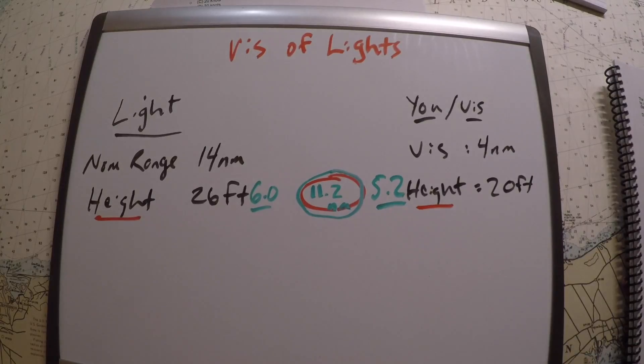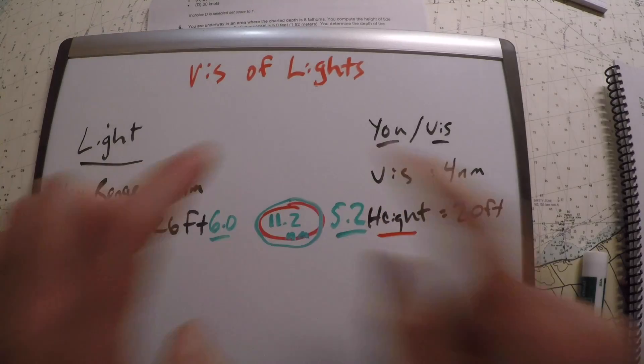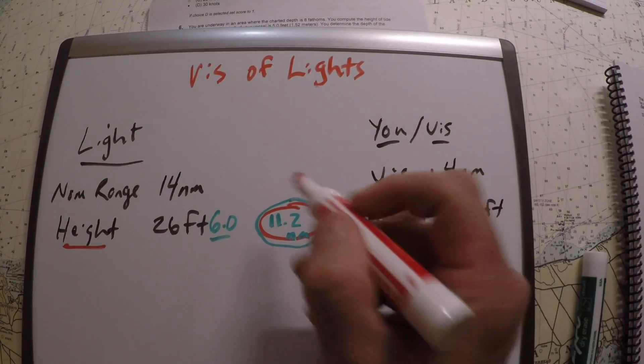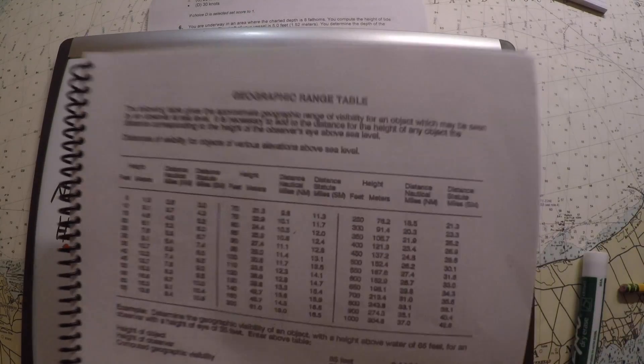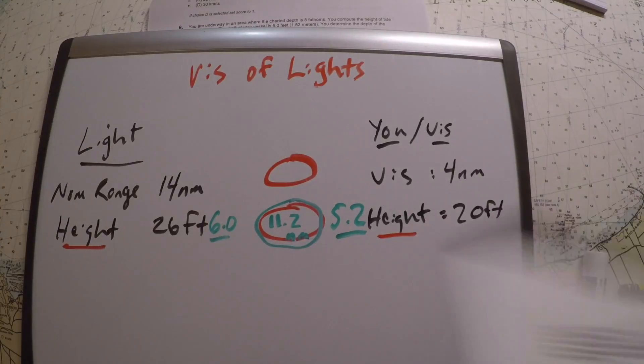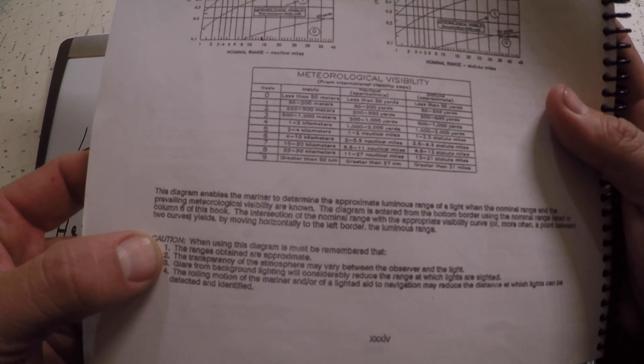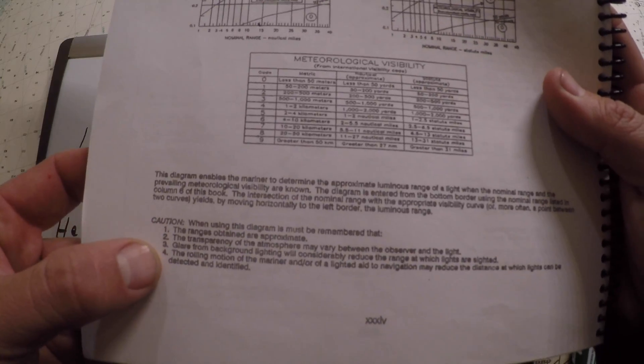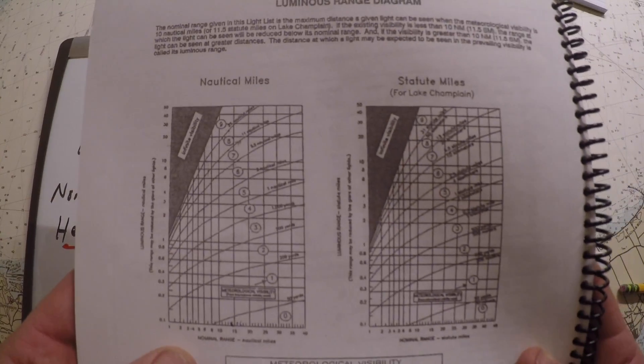So that's part one of the problem. Part two is taking a look at the nominal range and the visibility to calculate the luminous range, and then whichever one of these two is less is going to be our final answer. On the very next page in the light list is the luminous range diagram. It's not a very good diagram, but you should read the instructions. It says the ranges are approximate, the atmosphere can vary, the rolling motion of your ship can vary. This is purposefully designed to be approximate.